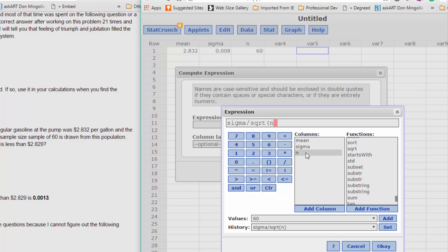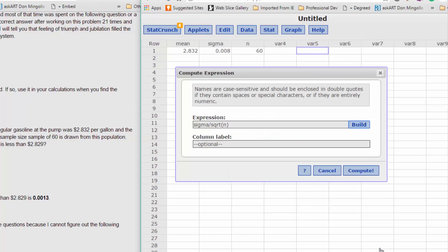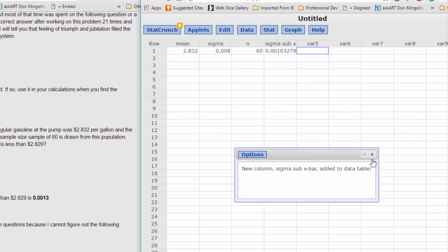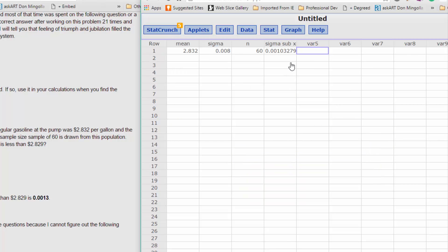But I've put it in there, SQRT, open parentheses, double click on my n to select that, close parentheses. And now I'm going to say OK. And I get back to this intermediate dialog. And let's label our new column sigma sub x bar, and click on compute. So I've got a value there of my sampling distribution standard deviation of 0.0010.